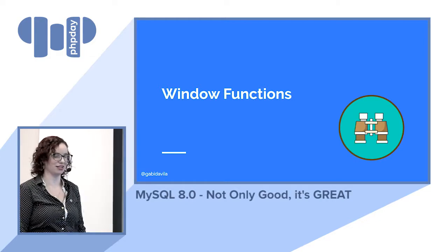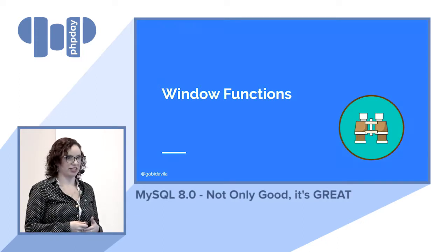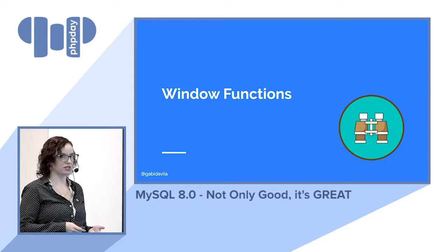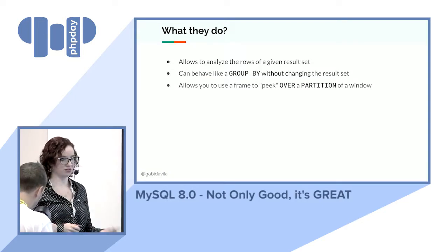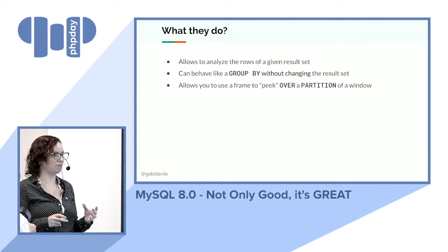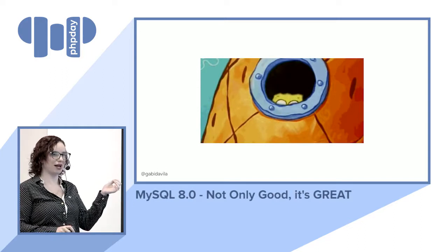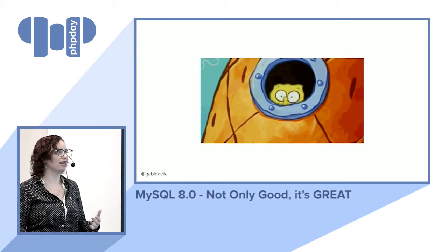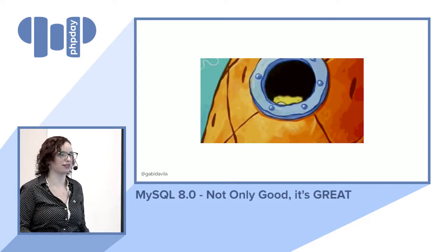Window functions are my favorite part — they're really powerful. They've been part of the SQL standard since 2003 and are also called analytical queries. They allow you to analyze rows of a given result set, behaving like a GROUP BY but without collapsing rows. You can partition results and add new information on top without changing the base result set. For example, you can get the top three orders per user across all users.